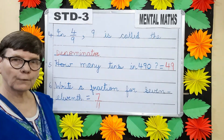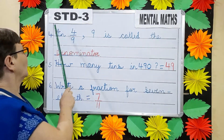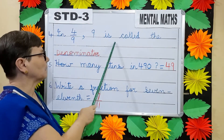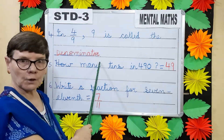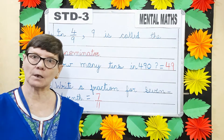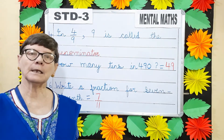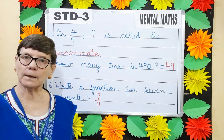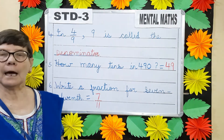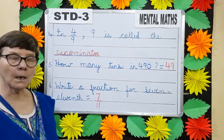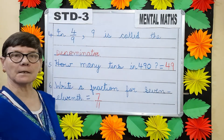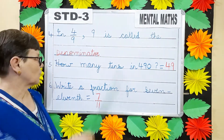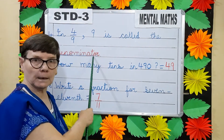Question number 4: In 4 by 9, 9 is called the dash. In a fraction, the number above the line is called the numerator, and the number below the line is called the denominator. So we will write denominator.